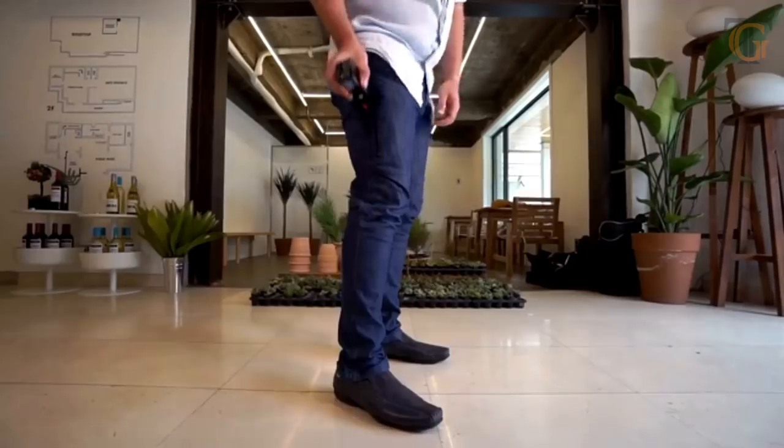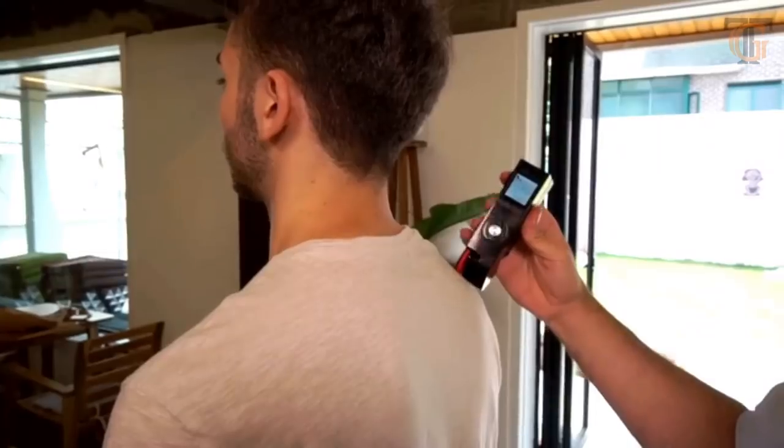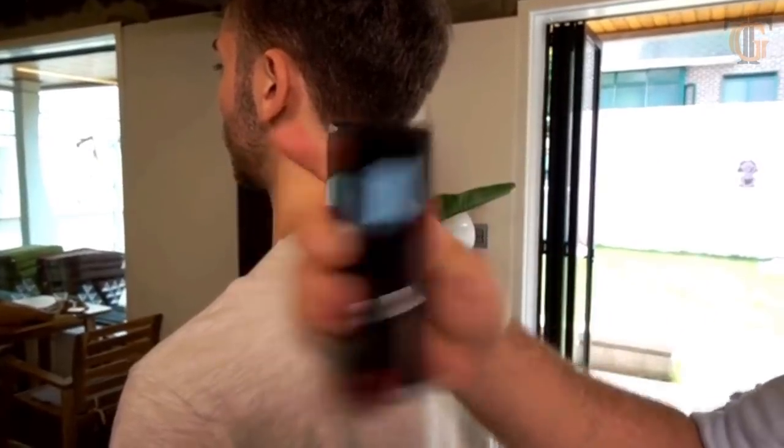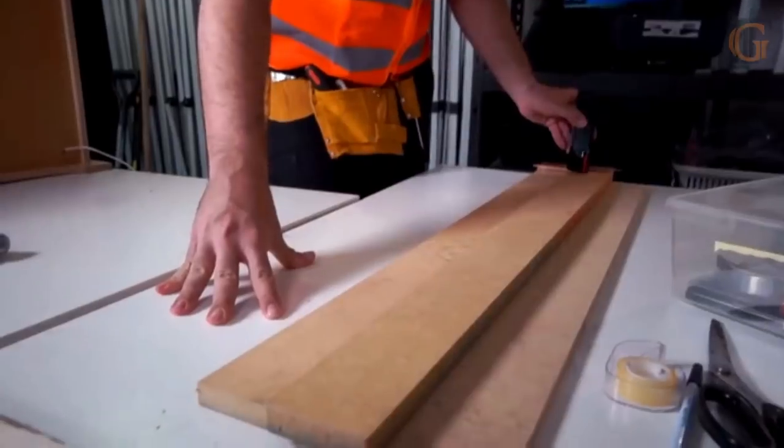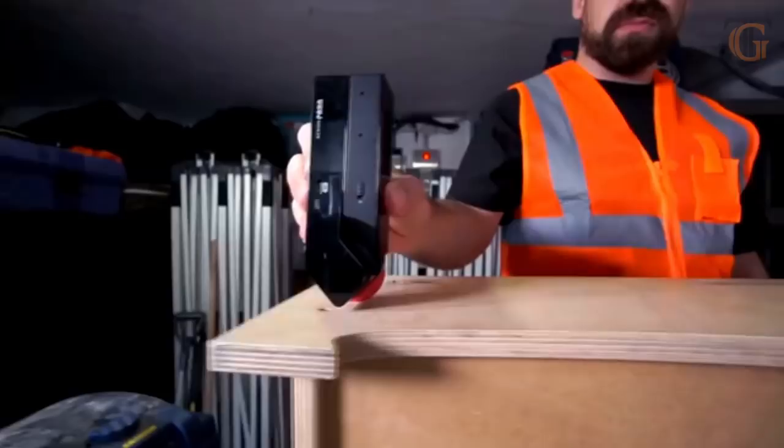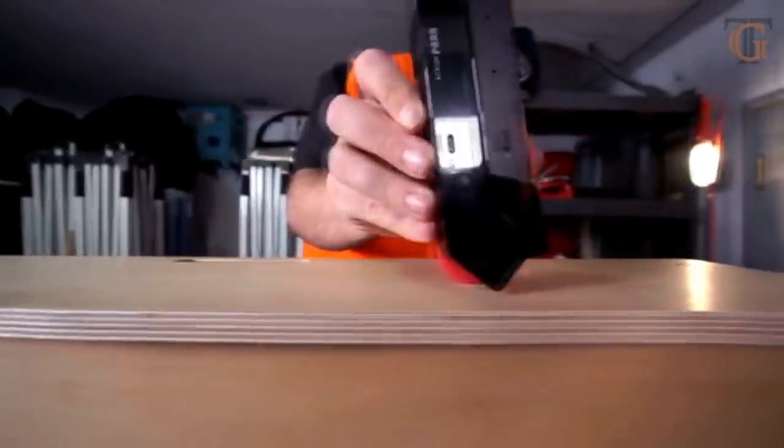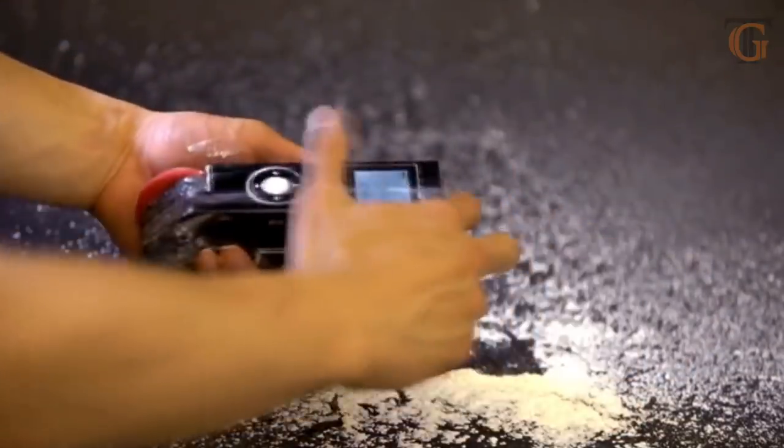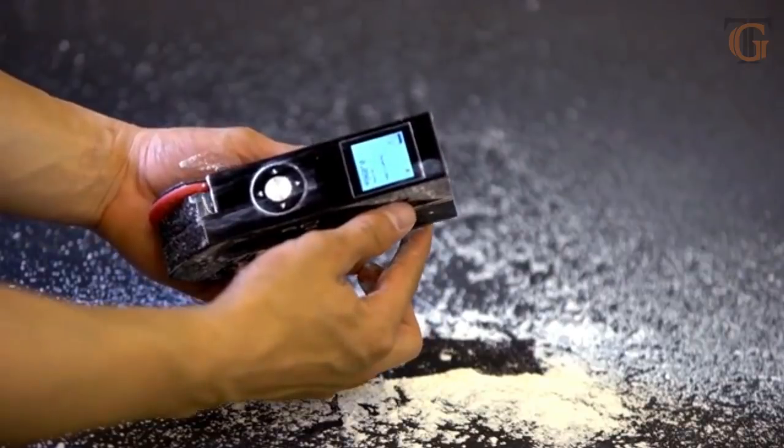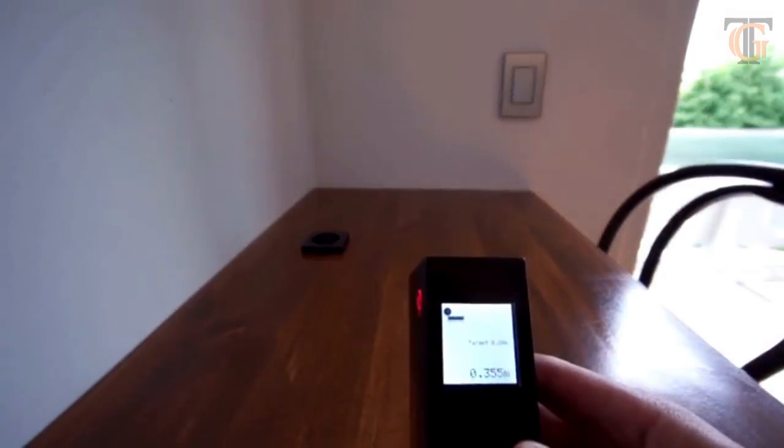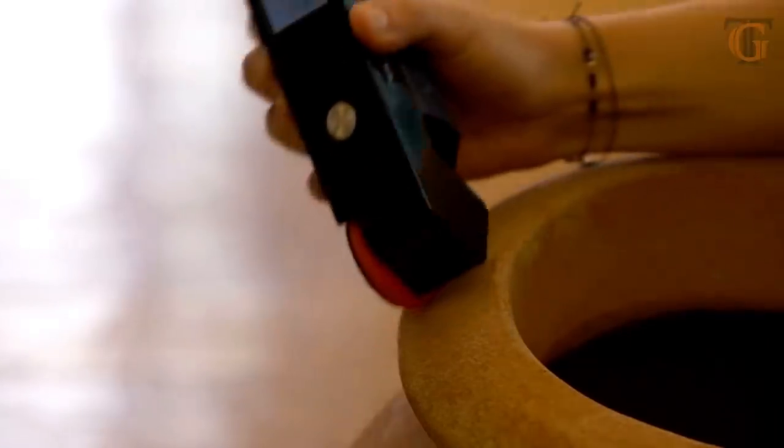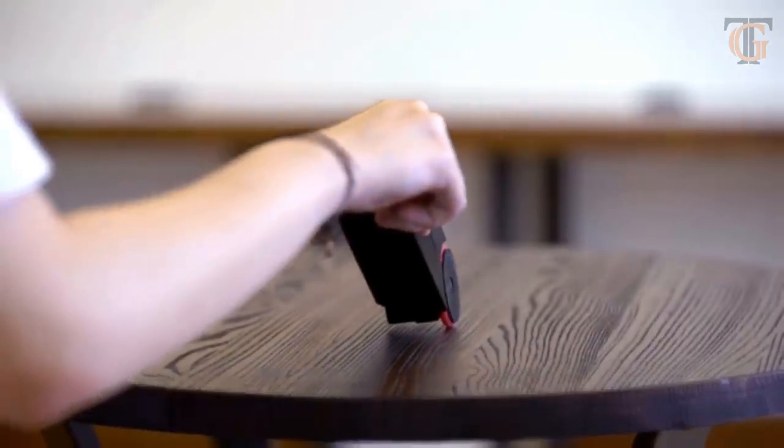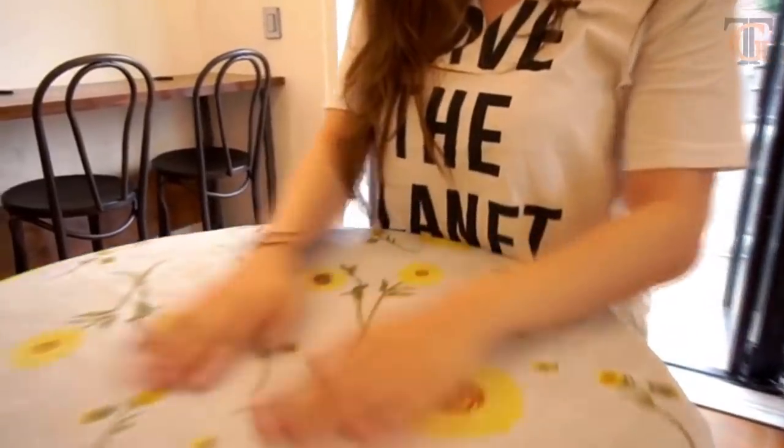Para is versatile. It can be used in various fields. It can even be used to measure you. Para can be used by experts as well as people who are unfamiliar with measuring. Para is specifically designed to be dustproof, making it reliable in any work environment. You can measure curves by simply rolling Para. You can also measure all kinds of irregular shaped objects with just one hand.